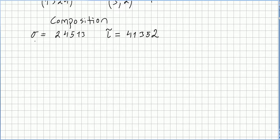Let us say we have the permutation (2, 4, 5, 1, 3) and the transposition (4, 1, 3, 5, 2). This is a transposition because only 3 is in its own place — 3 goes to 3 — so we have an even number of elements interchanged. This is the transposition and this is the permutation.